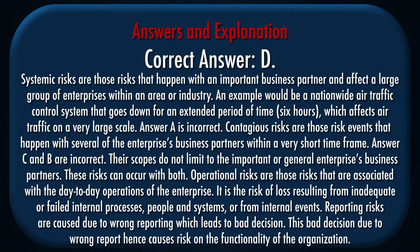Correct answer: D. Explanation: Systemic risks are those risks that happen with an important business partner and affect a large group of enterprises within an area or industry. An example would be a nationwide air traffic control system that goes down for an extended period of time — 6 hours — which affects air traffic on a very large scale.